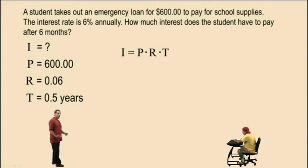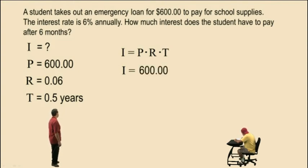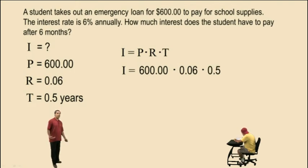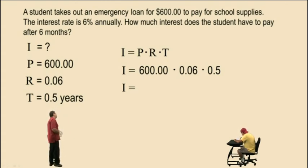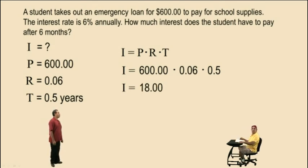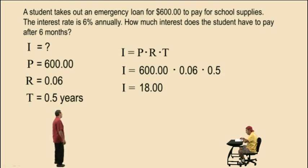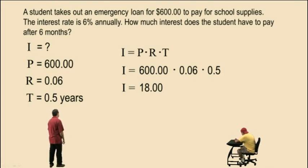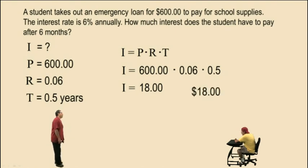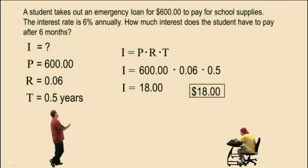Our formula is I equals PRT. I equals $600 times 0.06 times 0.5. Charlie, what did you get? 18. That's 600 times 0.06 times 0.5 equals $18. So the interest the student has to pay after six months is $18.